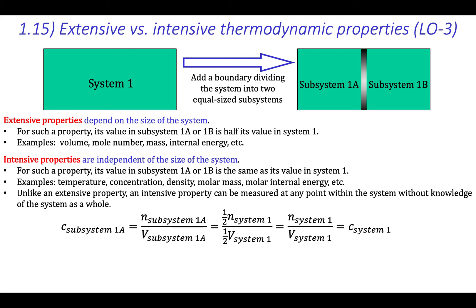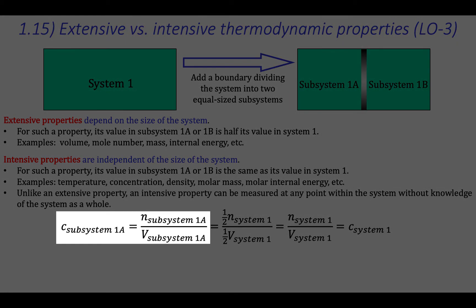Concentration is another intensive property. We can prove this by remembering that concentration is the mole number divided by the volume. So the concentration in subsystem 1a equals the mole number in subsystem 1a divided by the volume of subsystem 1a. Since volume and mole number are extensive properties, we can substitute one-half the mole number in System 1 for the mole number in subsystem 1a, and one-half the volume in System 1 for the volume in subsystem 1a.